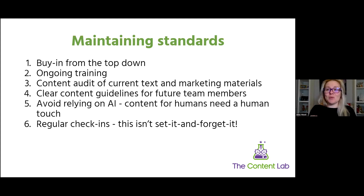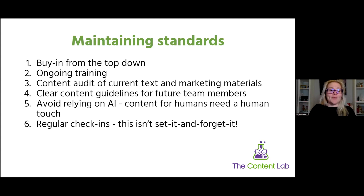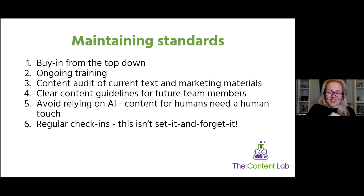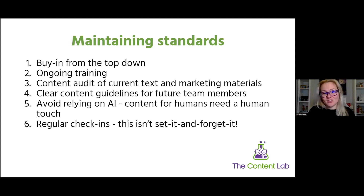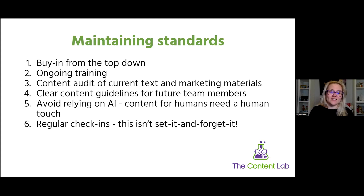Content guidelines are also really handy when onboarding new team members — they literally have a checklist of 'is this on brand, is this accessible?' Avoid relying on AI: content for humans needs a human touch. AI is devoid of human emotion, it lacks description, and it reads like a robot wrote it. If you are using AI, make sure you're editing it. AI isn't known for writing accessible content. And do regular check-ins — this isn't set it and forget it. Do a content audit at least once a year.